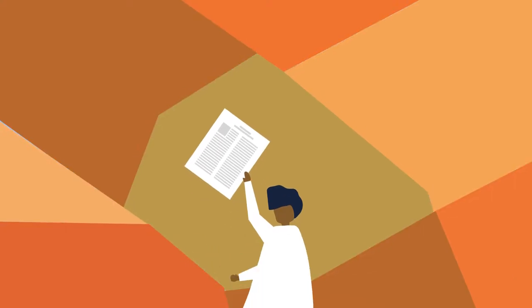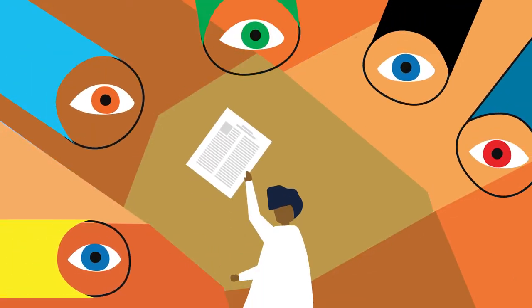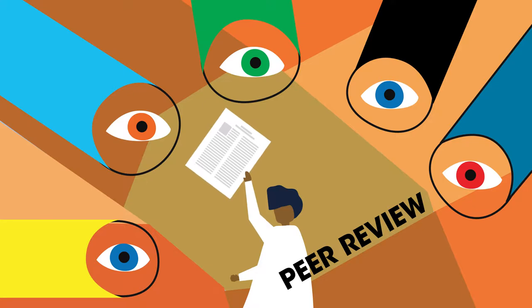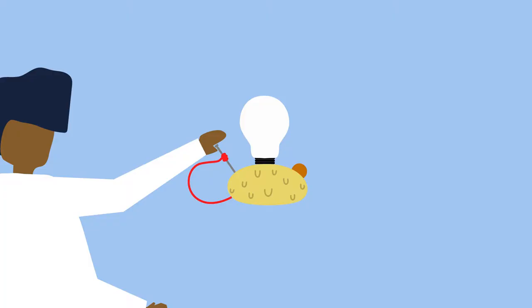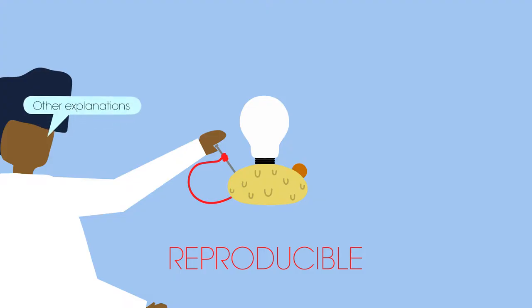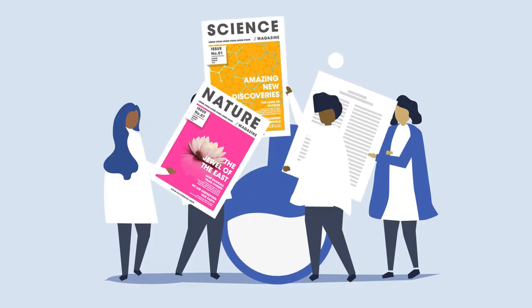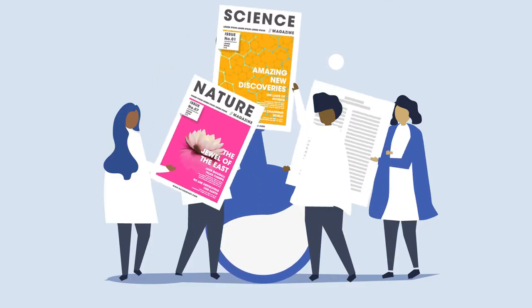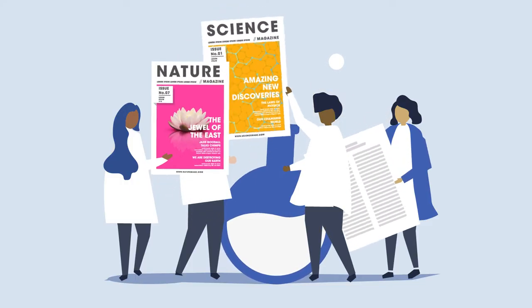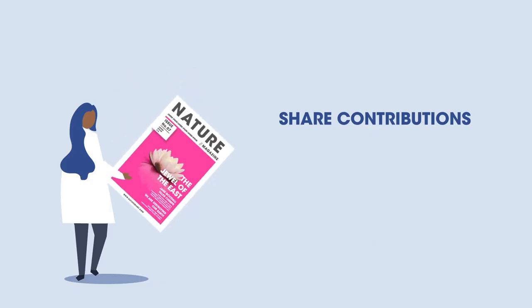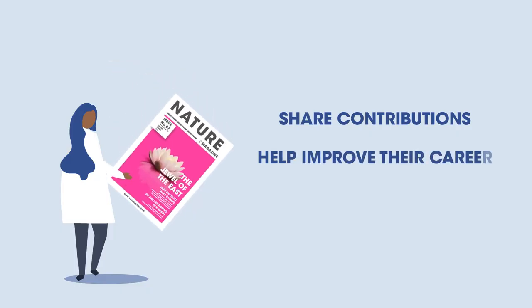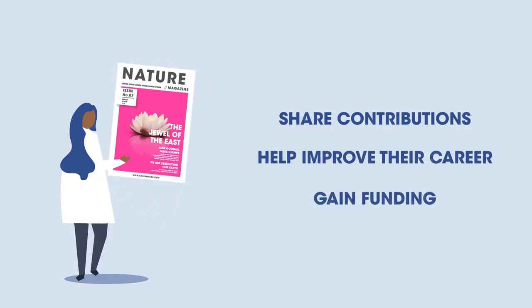When the paper is published, it is then reviewed by other scientists in a process called peer review. This can be an anonymous process. Sometimes other scientists repeat the experiments to ensure the data is reproducible, and sometimes other explanations for findings are suggested. Scientists want to get their work published in these journals so that they can share their contributions with others, and also to help improve their career and gain more funding for future projects.